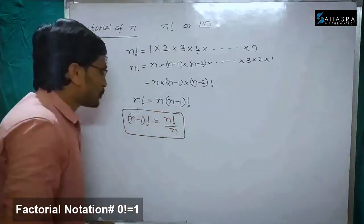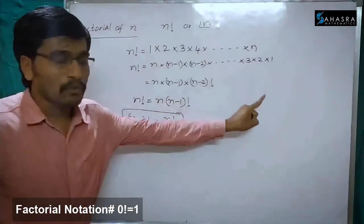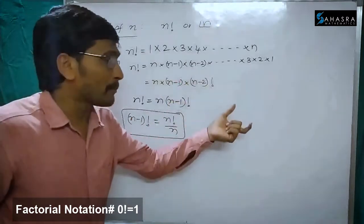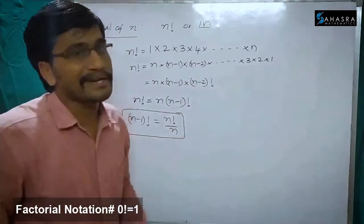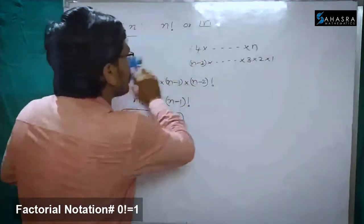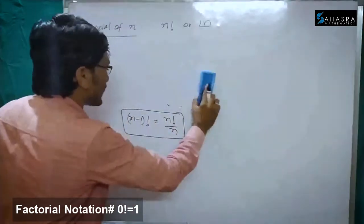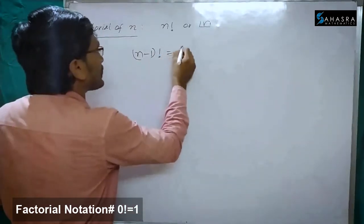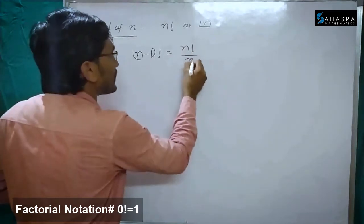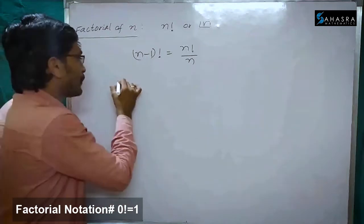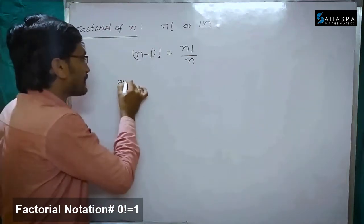So the formula is: n minus 1 factorial is equal to n factorial by n. Through this formula we can find 1 factorial and 0 factorial and the factorial of negative integers also. The formula is: n minus 1 factorial equal to n factorial by n. Now put n is equal to 1.